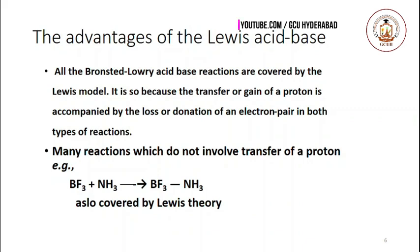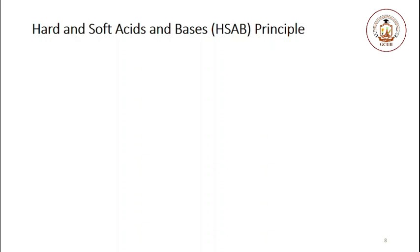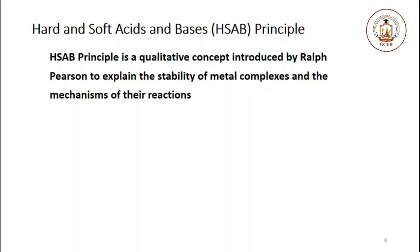To summarize: we have three models. Arrhenius described acid as a proton producer and base as an OH ion producer. Brønsted-Lowry defined acid as a proton donor and base as a proton acceptor. Lewis described acid as an electron pair acceptor and base as an electron pair donor. Now let's discuss the hard and soft acids and bases principle.